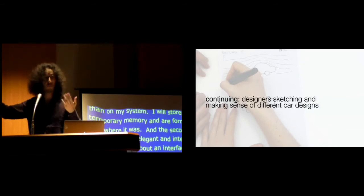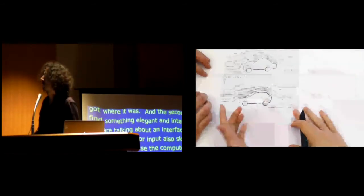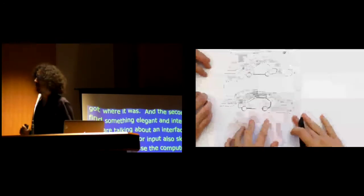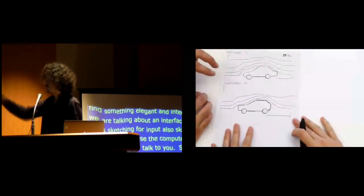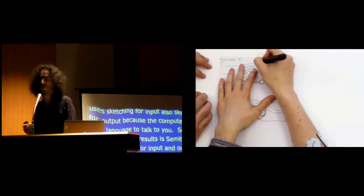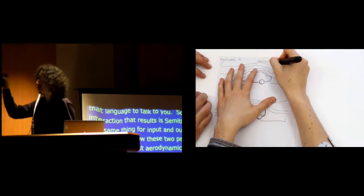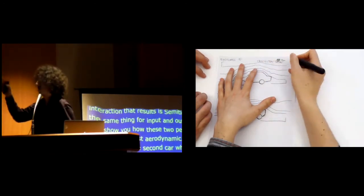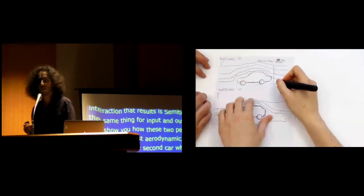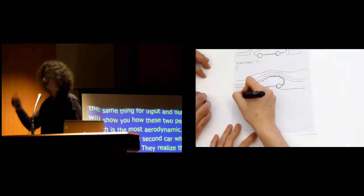I'm dragging my hand along, and the system is going left and right. The second, and that's perhaps the most important and key thing to this presentation, is that it's persisting the output. It's doing that by using the pen to leave the trace on the paper rather than just on my proprioceptive system, which is probably obeying the laws of forgetfulness and I'll just store it in my temporary memory and after four seconds, I forgot where I was and I can't compare things. And the third one, which I find something elegant and interesting, is that we're talking about an interface that uses sketching for input but also sketching for output because the computer uses that language, sketching, to talk to you.